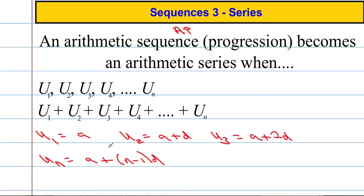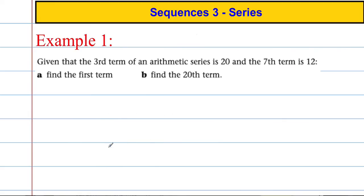Let's have a quick look at an example here and see how we might be able to apply this. It tells us that the 3rd term of an arithmetic sequence is 20 and the 7th term is 12. We're asked to find the first term and then find the 20th term. Let's use the formula A plus N minus 1 times D to help us solve this problem.